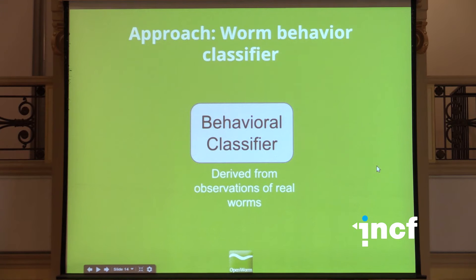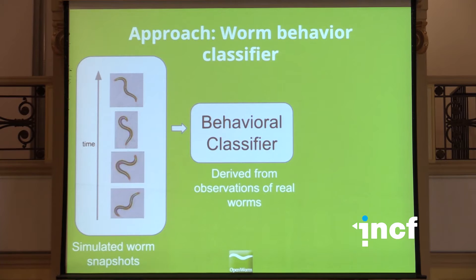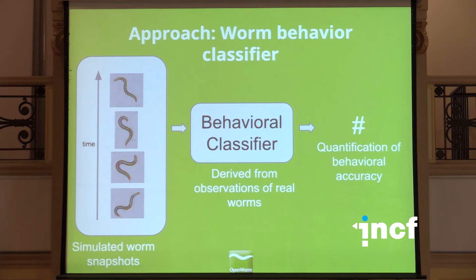Follow-up work has shown they can actually detect the difference between a wild-type and any mutant C. elegans just based on the statistics of its movement. That's really important because it means we can use that for determining whether a simulated worm acts like a wild type, a mutant, or none of the above. That's a really nice constraint — our approach is largely about infrastructure building, taking essentially snapshots of a simulated worm and feeding it into a classifier to give ourselves a metric for knowing if we're getting closer to simulating or not.